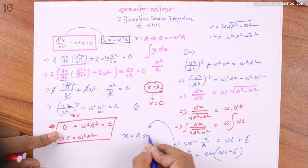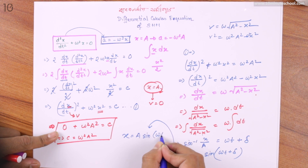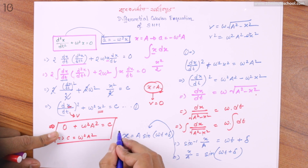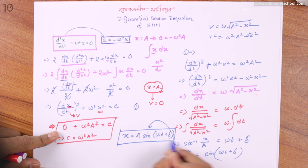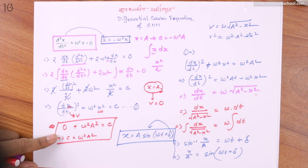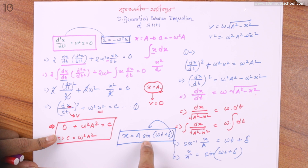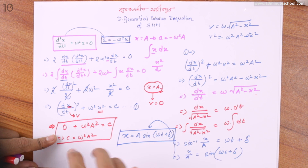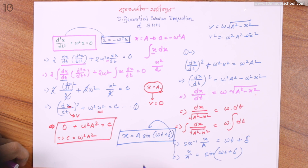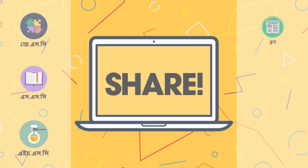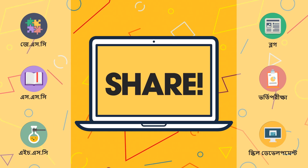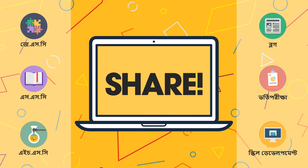So we can write x equals A sine(omega t plus delta). This is the final result of the derivation.